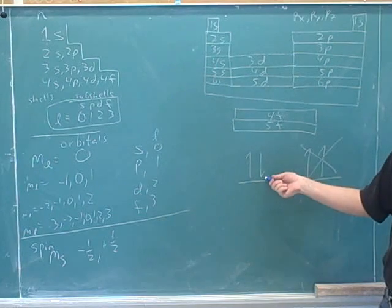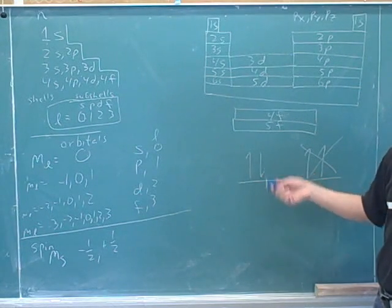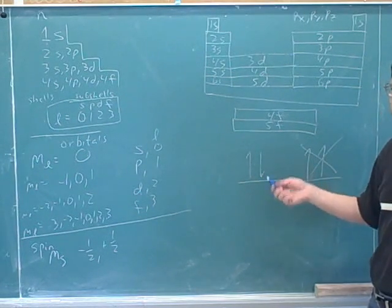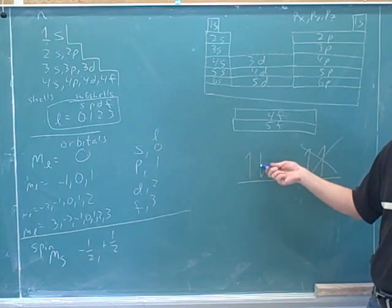But this is in accord with it, because these do not have all four numbers the same. They have three numbers the same, but their spin numbers are different. We might say this is positive one-half, and this is negative one-half.